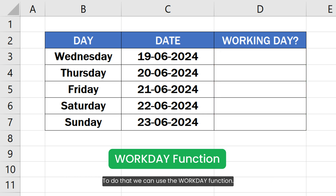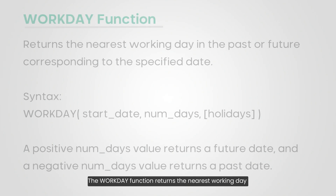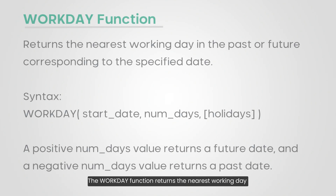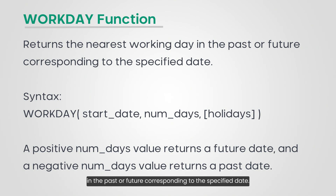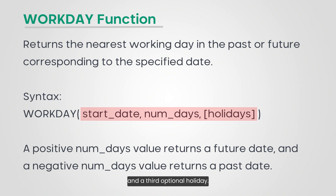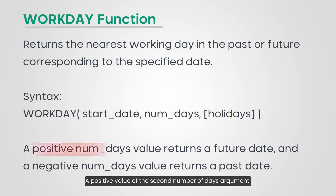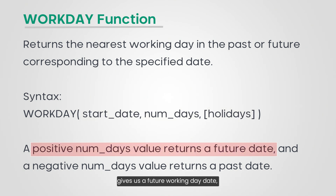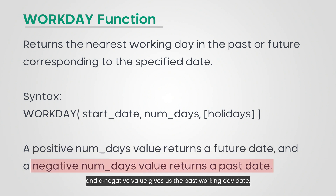To do that, we can use the Workday function. The Workday function returns the nearest working day in the past or future corresponding to the specified date. This function accepts three arguments: a start date, a number of days to add or remove, and a third optional holiday argument. A positive value of the second number of days argument gives us a future working day date, and a negative value gives us the past working day date.